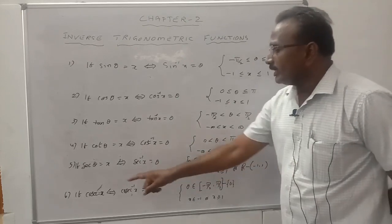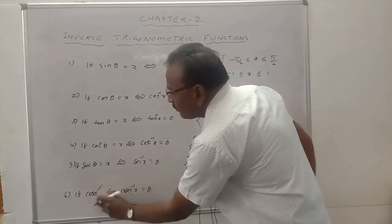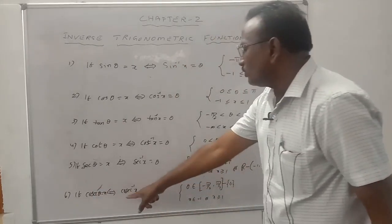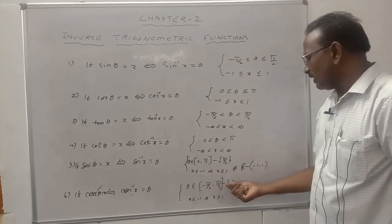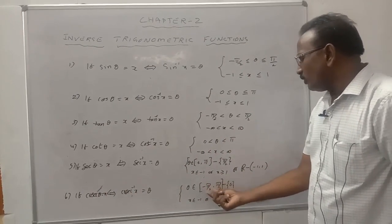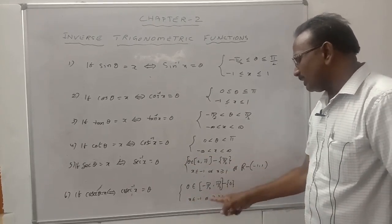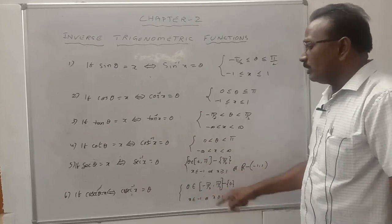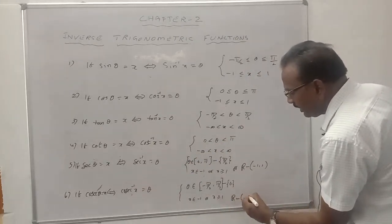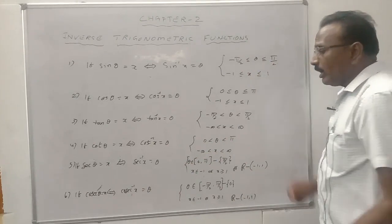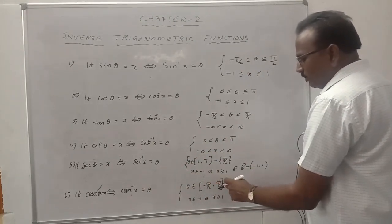For cosecant: cosecant theta equals x if and only if cosecant inverse x equals theta, where theta belongs to the closed interval minus pi by 2 to pi by 2 excluding 0. The domain of cosecant inverse x is the set of all real numbers except the open interval minus 1 to 1, and the range is the closed interval minus pi by 2 to pi by 2 excluding 0.